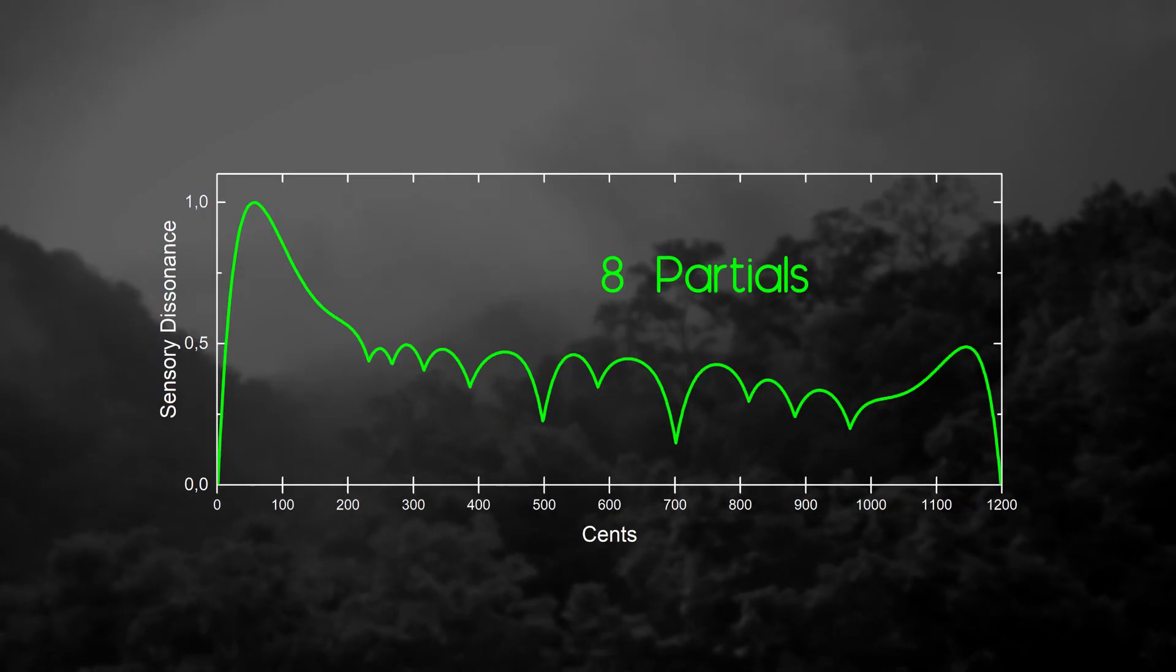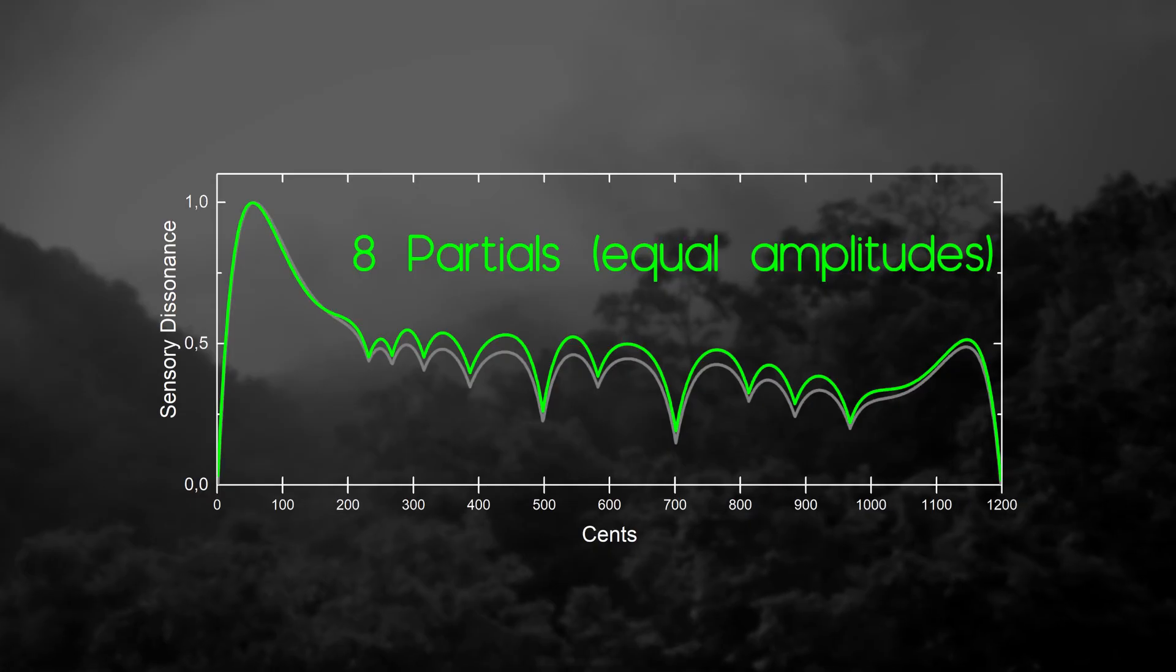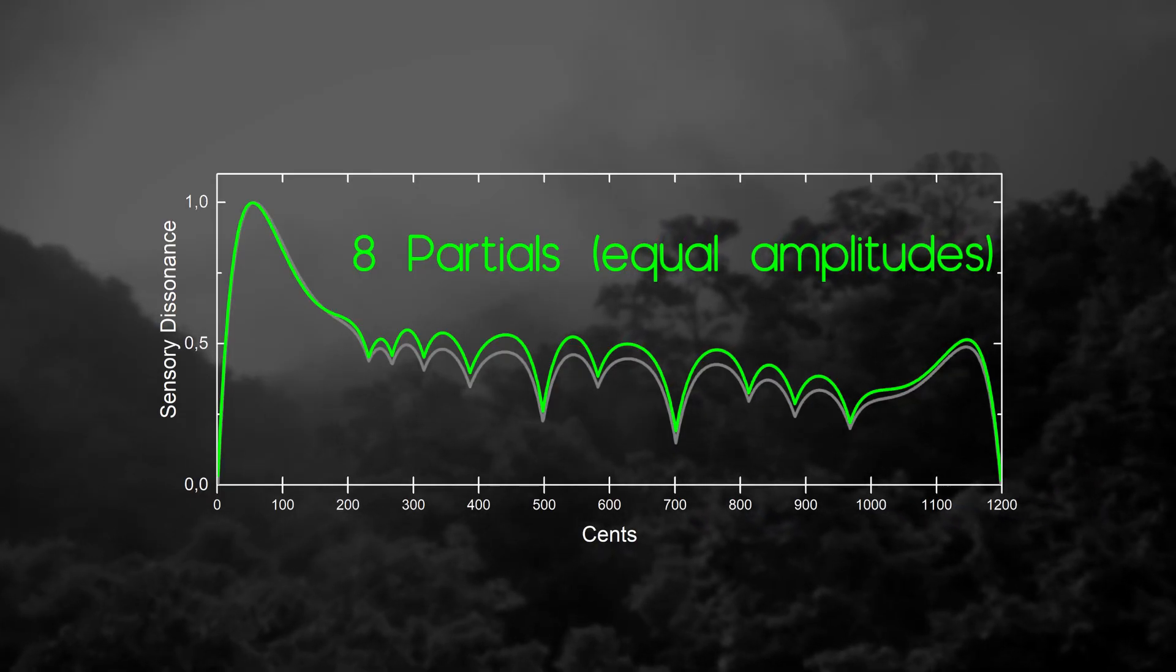Changing the amplitudes of partials in spectrums will change how deep the dips are, but won't change their place and frequency.